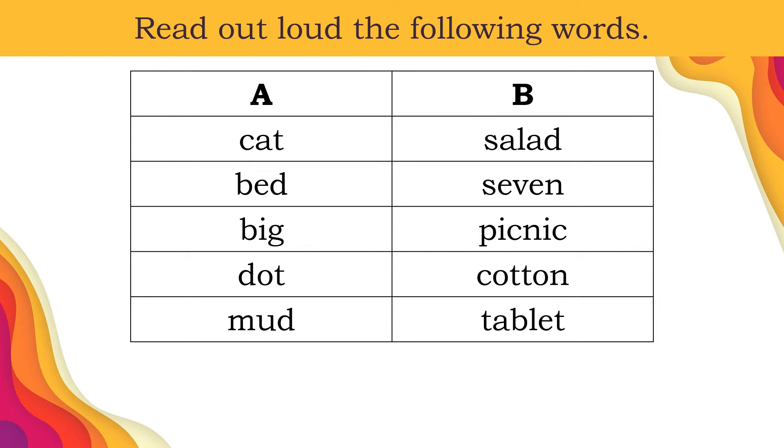Under column B, we have salad, seven, picnic, cotton, tablet.